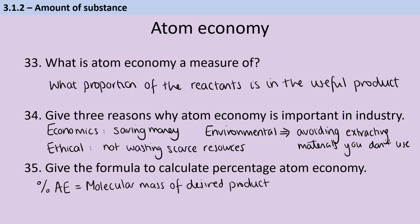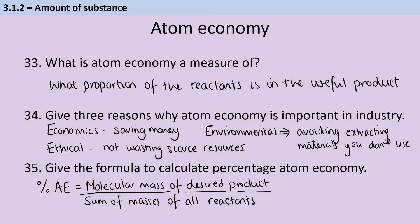To calculate percentage atom economy, take the molecular mass of the desired product and divide it by the sum of the masses of all reactants, then multiply by 100%. However, on a practical note, you could divide by the total mass of all products instead, because the law of conservation of mass means the total mass of products equals the total mass of reactants. If you've already worked out the mass of the desired product as the numerator, it's less effort to sum the products — saving you time in the exam.